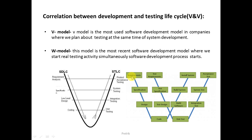In the W model, at the time of Requirement Analysis, the tester or QE person tests the requirement document for feasibility, practicality, and whether it is not ambiguous. At Specification, they test the specification document. At Designing, the QE person tests the design document. Then for execution: at Coding, Unit Testing is done; at Integration, Build Software testing is done; at System Testing, the full system is tested; and at Acceptance Testing, installation testing is performed.